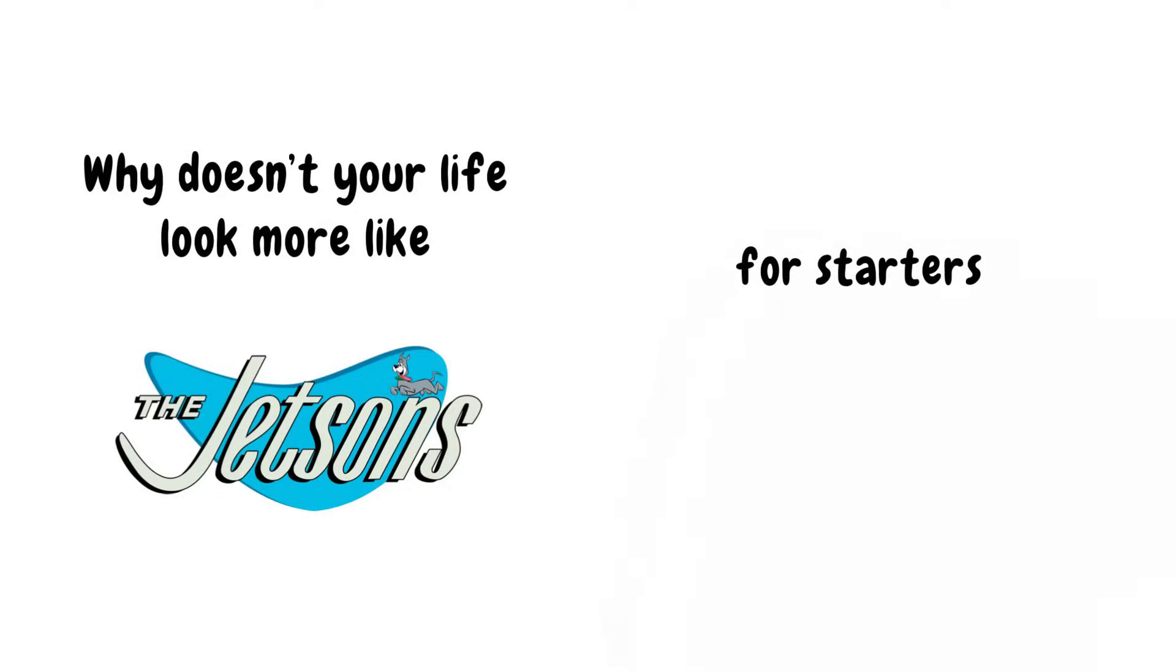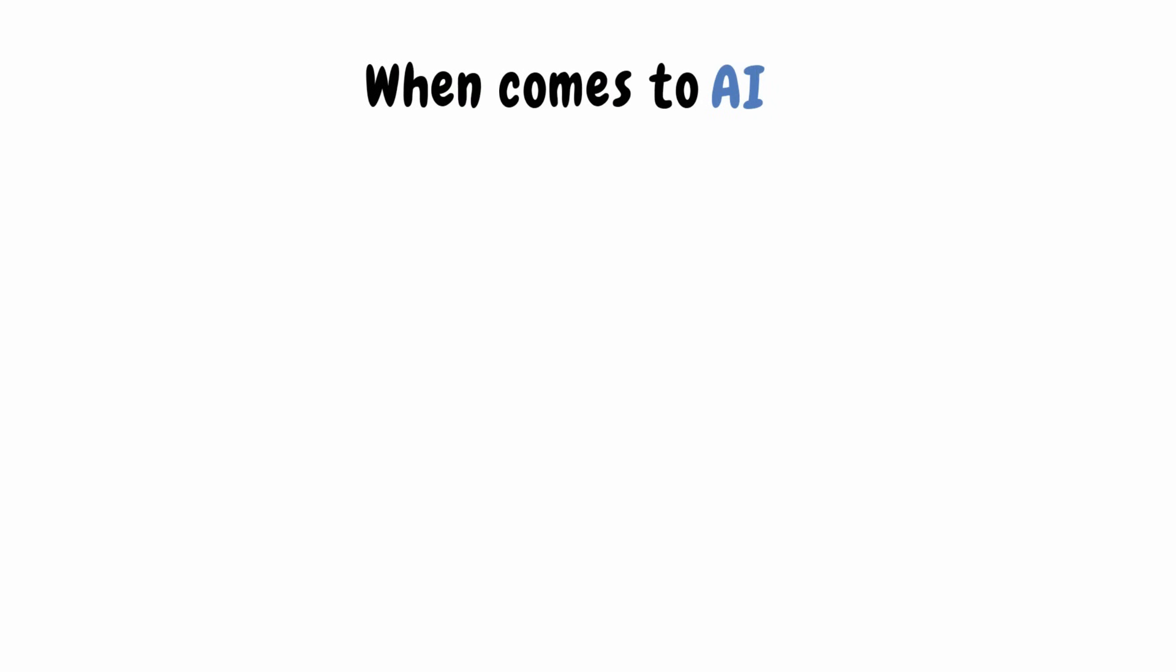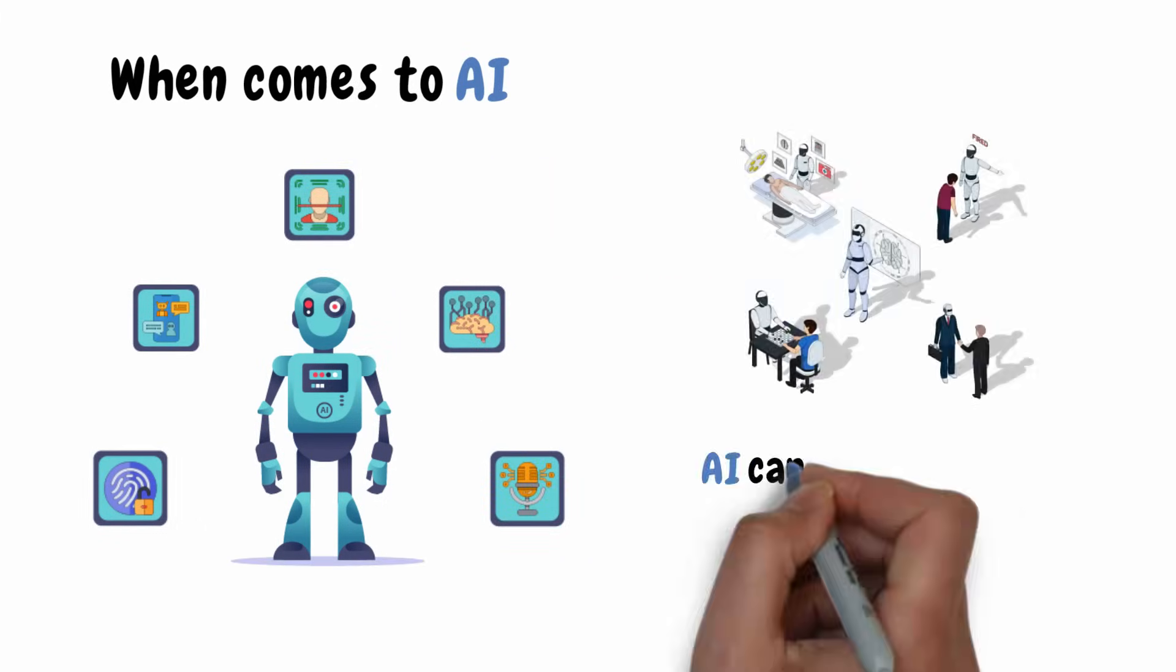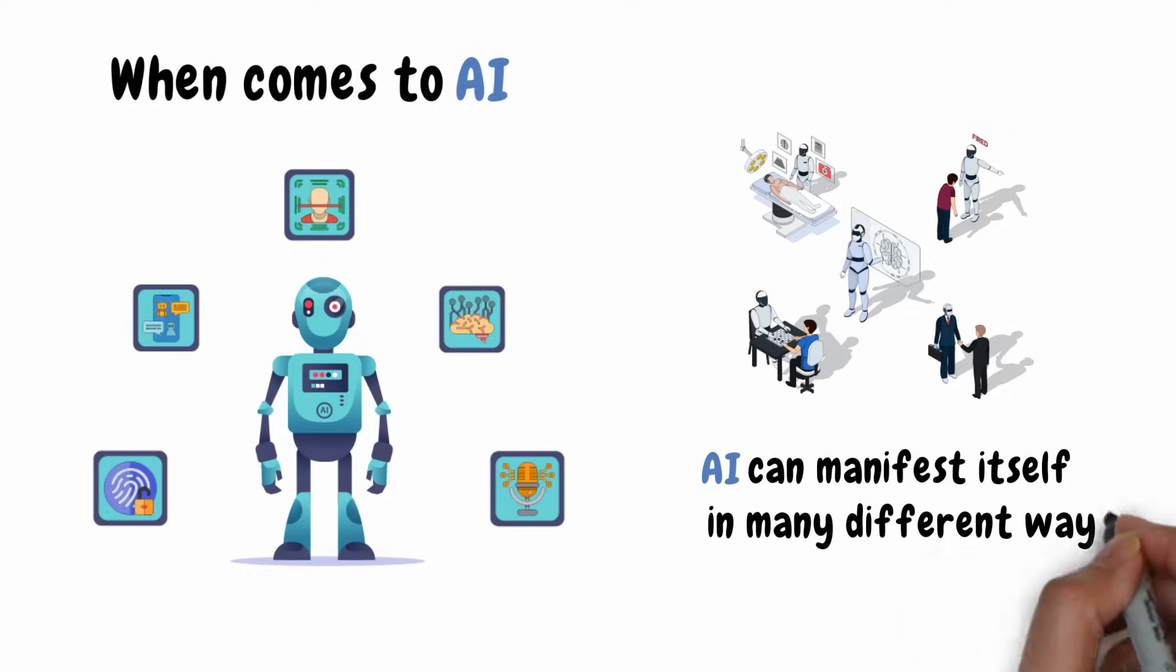Well, for starters, that's a cartoon. And when it comes to AI, a robot is nothing more than a shell concealing what's actually used to power the technology. AI can manifest itself in many different ways.